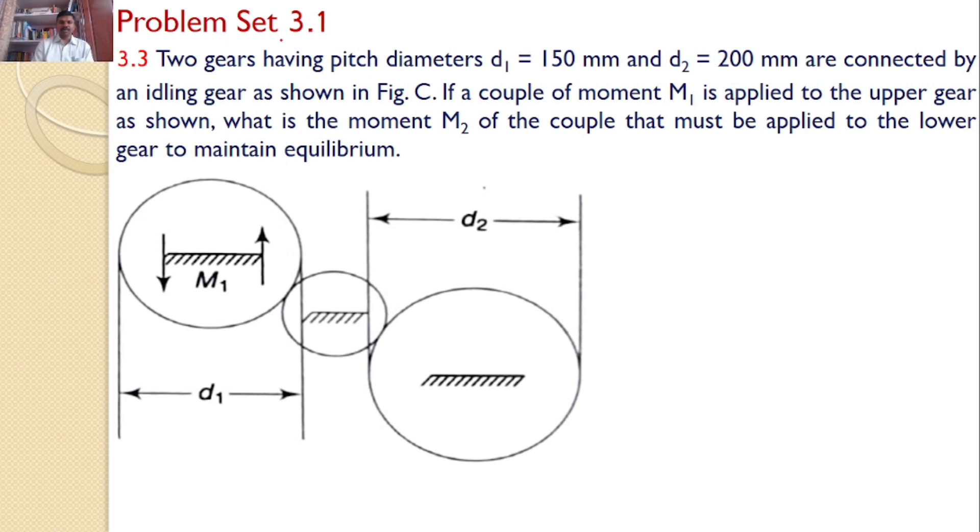In this tutorial, we will discuss Problem Set 3.1, Problem 3.3. Two gears having pitch diameters D₁ = 150 mm and D₂ = 200 mm